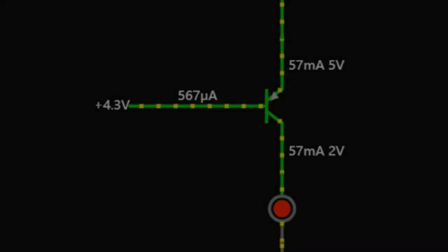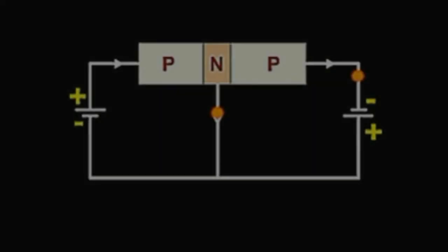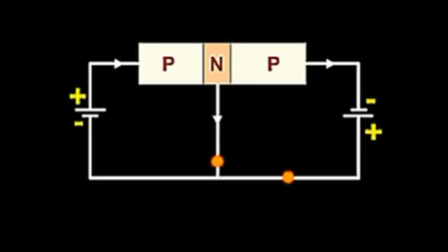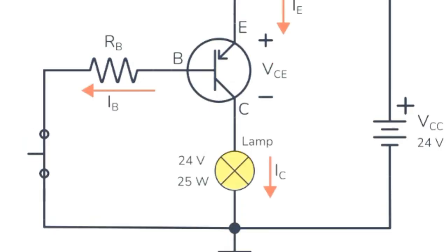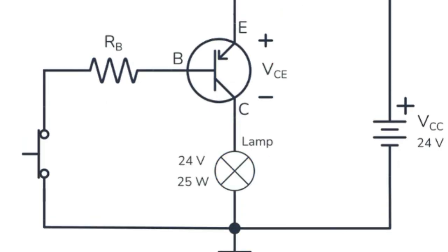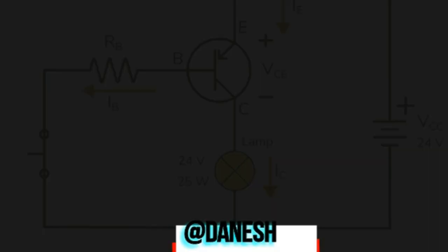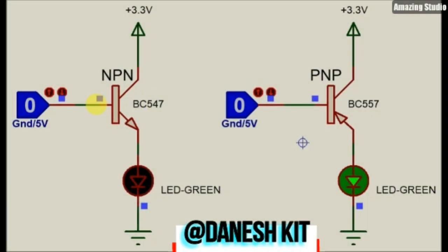In the PNP transistor, the base still controls the current, but the current flows in the opposite direction, from the emitter to the collector. Instead of electrons, the emitter emits holes that are collected by the collector.